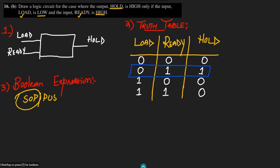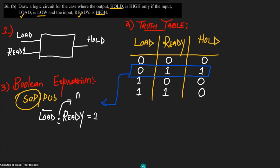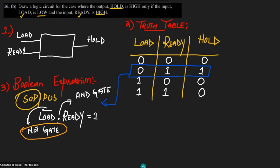After identifying the row where the output is high, we make both inputs equal to one so the product equals one. Load is zero so we take its complement, and ready is already one, so the expression is load-complement AND ready. There are no other product terms, so only one AND gate and one NOT gate are needed.